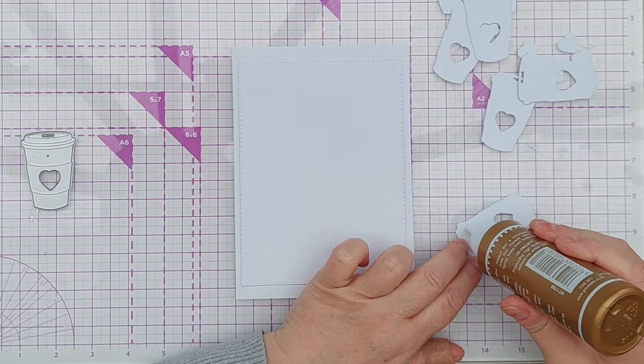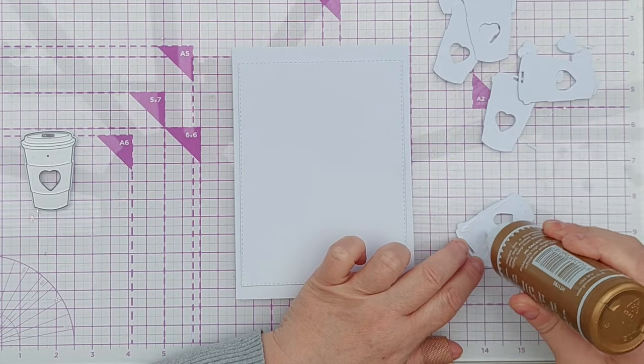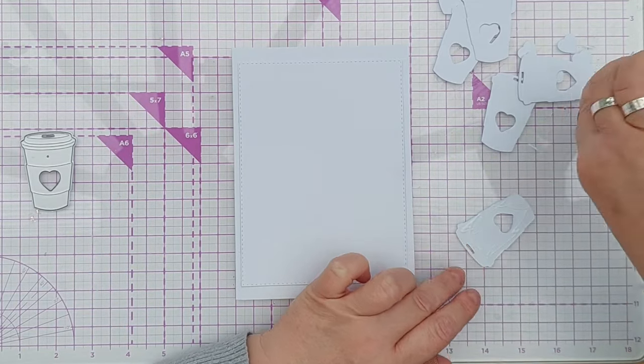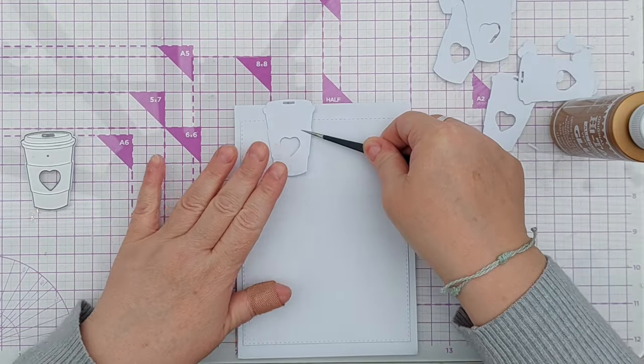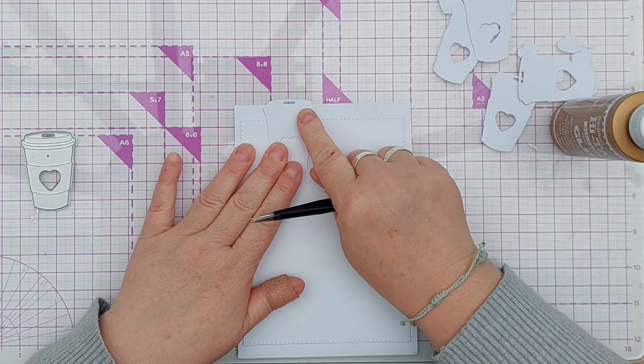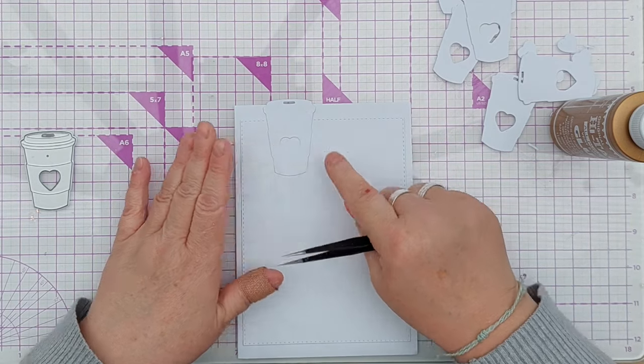Now I'm going to add my takeaway cup. It doesn't have to be coffee, it could be anything, and I'm going to have it coming off the top of the panel and off the top of the card.